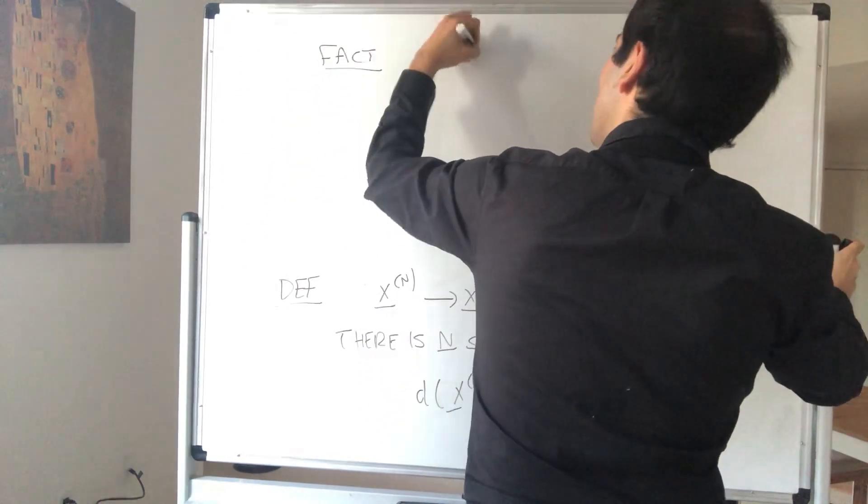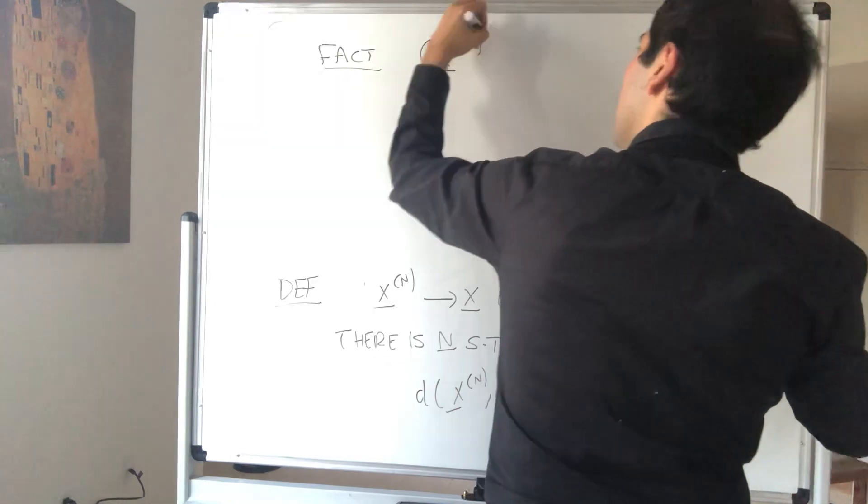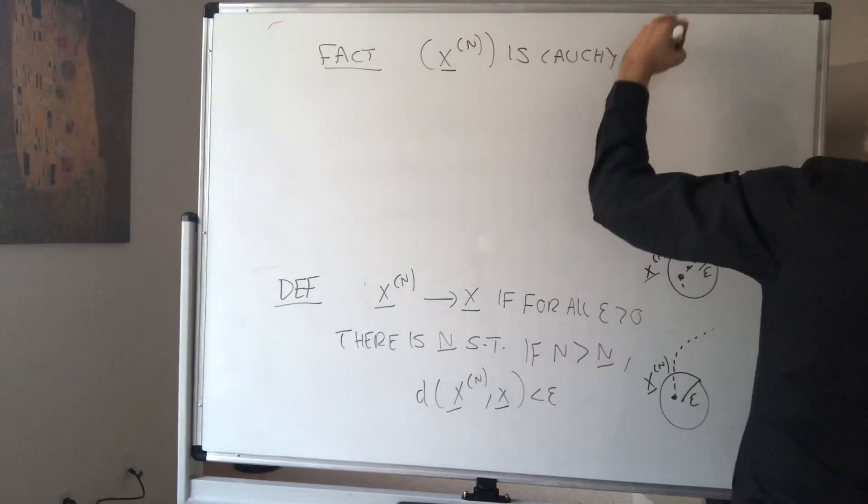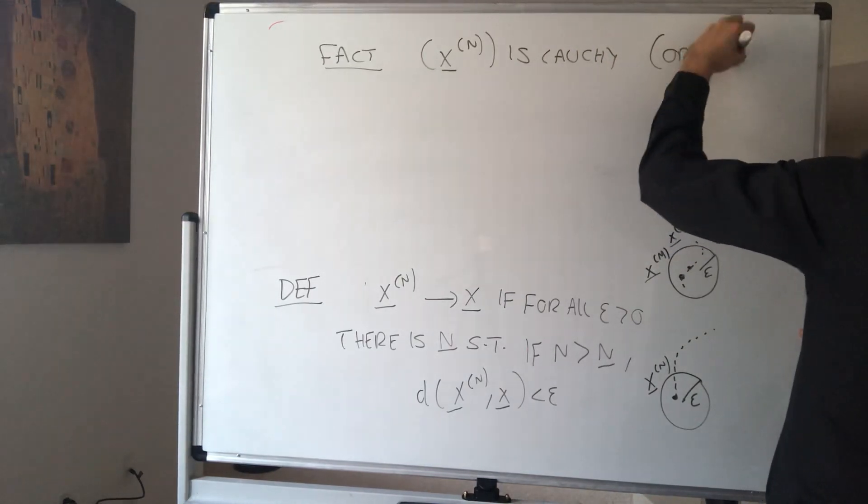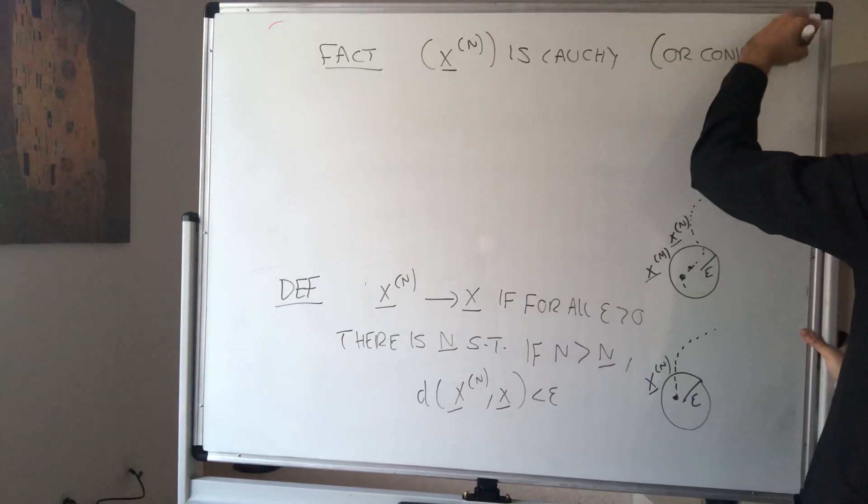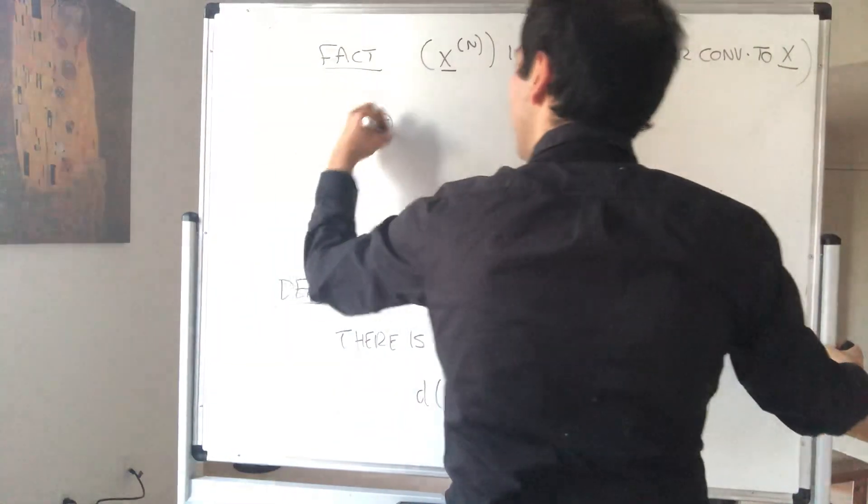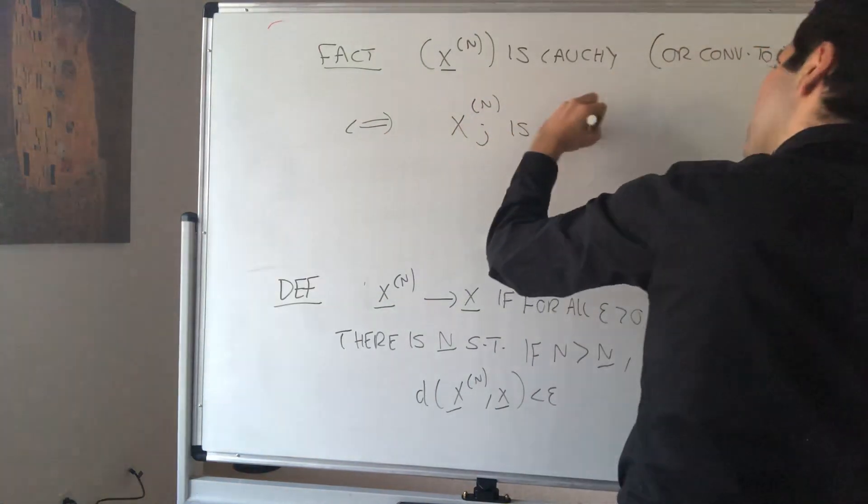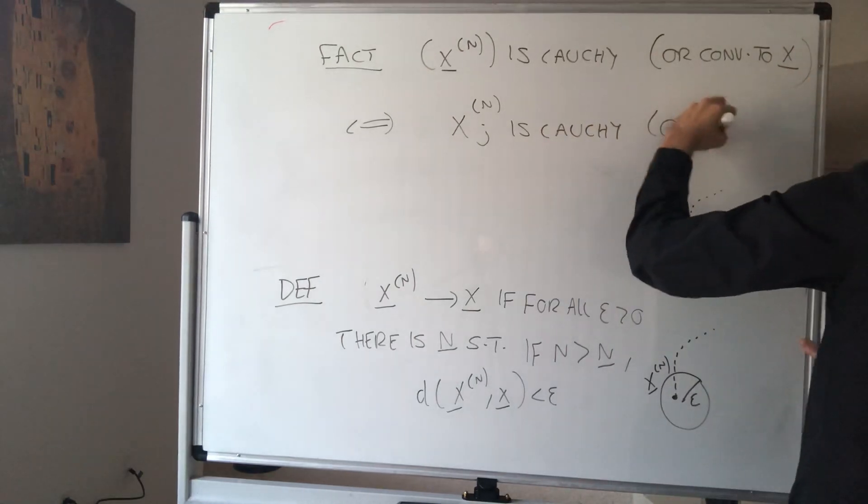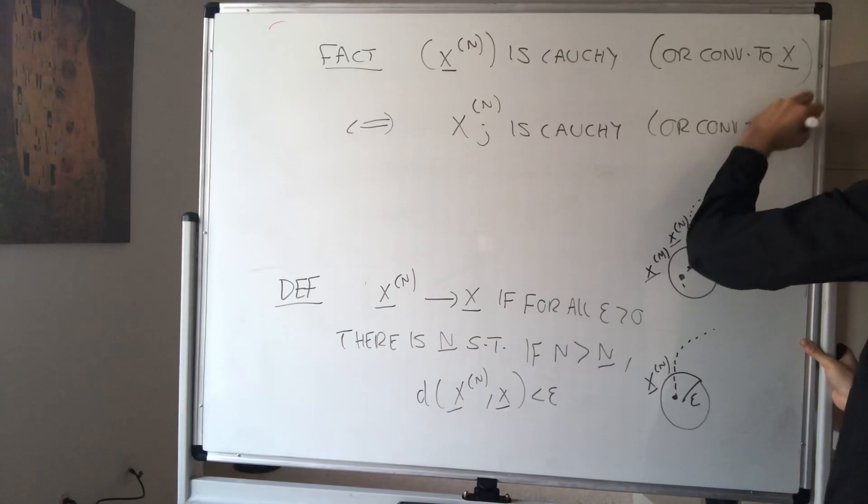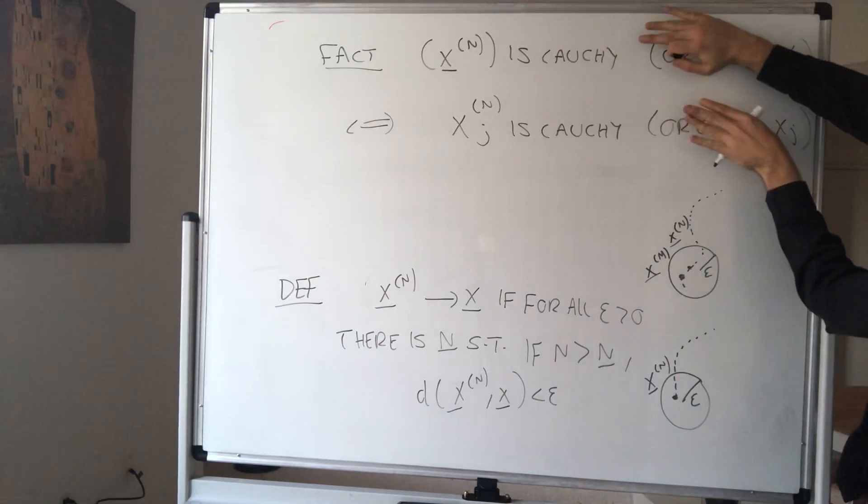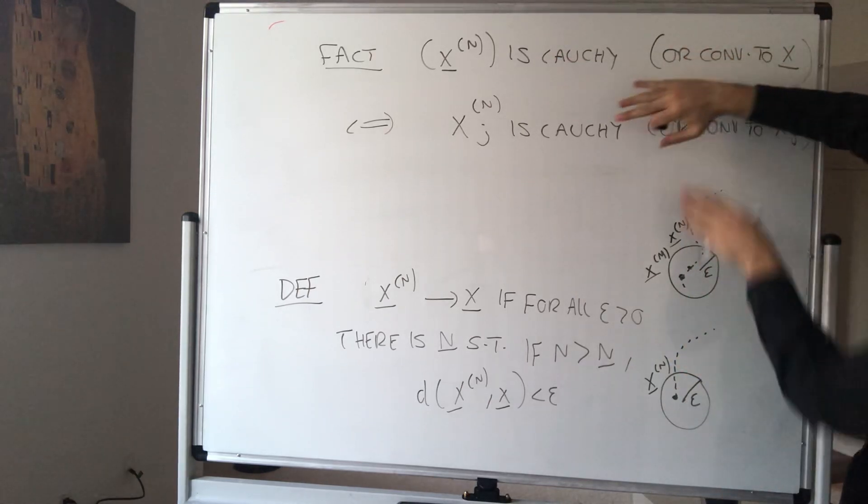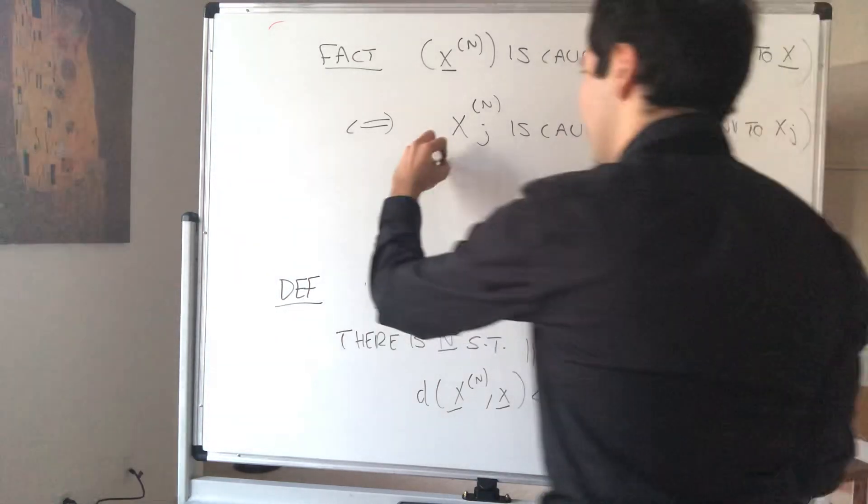Namely X_n is Cauchy, and the same thing with convergence to capital X, if and only if each component is Cauchy or converges to X_j. Both things hold. If X_n is Cauchy then X_n^j is Cauchy. If X_n converges to X then X_n^j converges to X_j, and that's for all j.